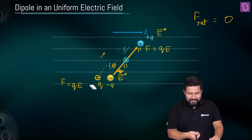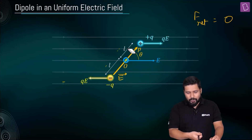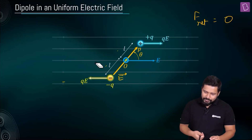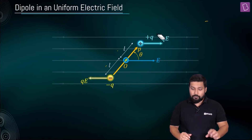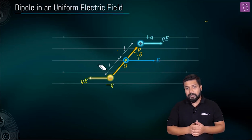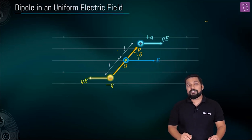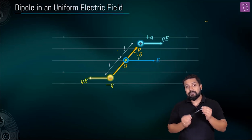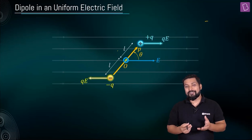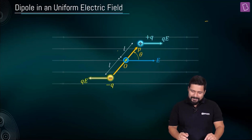Let's understand what happens now. We know that the positive charge is going to experience a force along the direction of the field and the negative charge is going to experience a force opposite to the direction of the field. The net force on the dipole, however, is going to be equal to zero. Since we have got two equal and opposite forces whose line of action is not the same, we are going to encounter a couple and that is going to generate a torque, which is going to rotate this dipole.